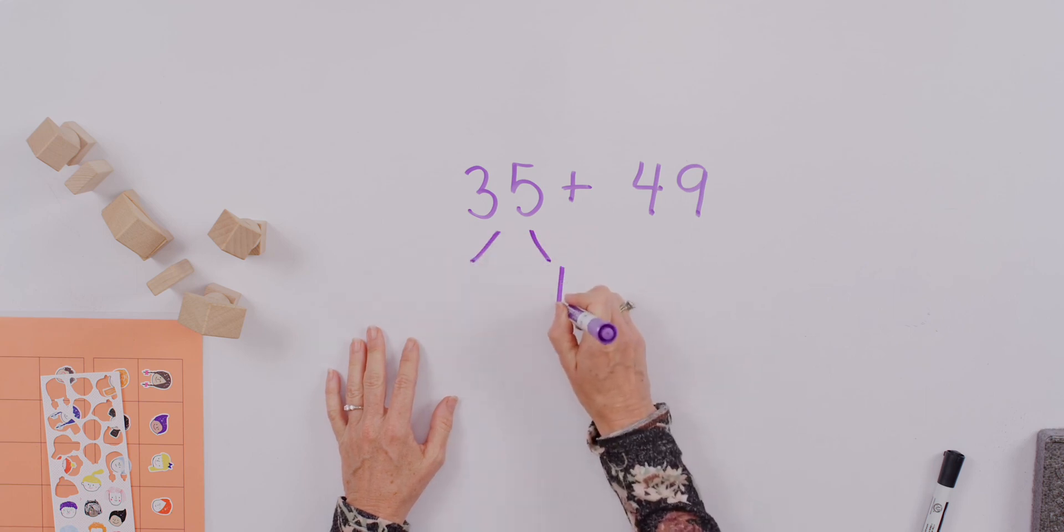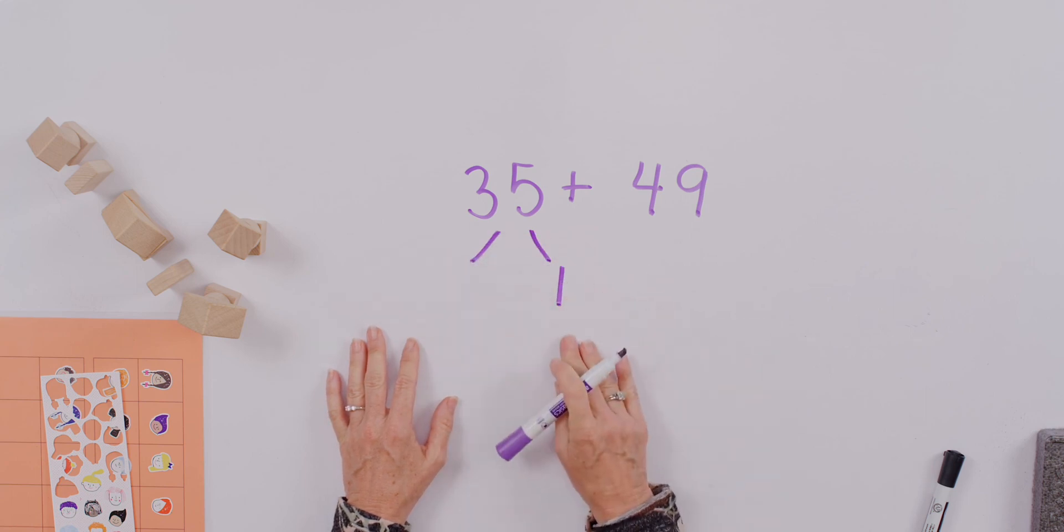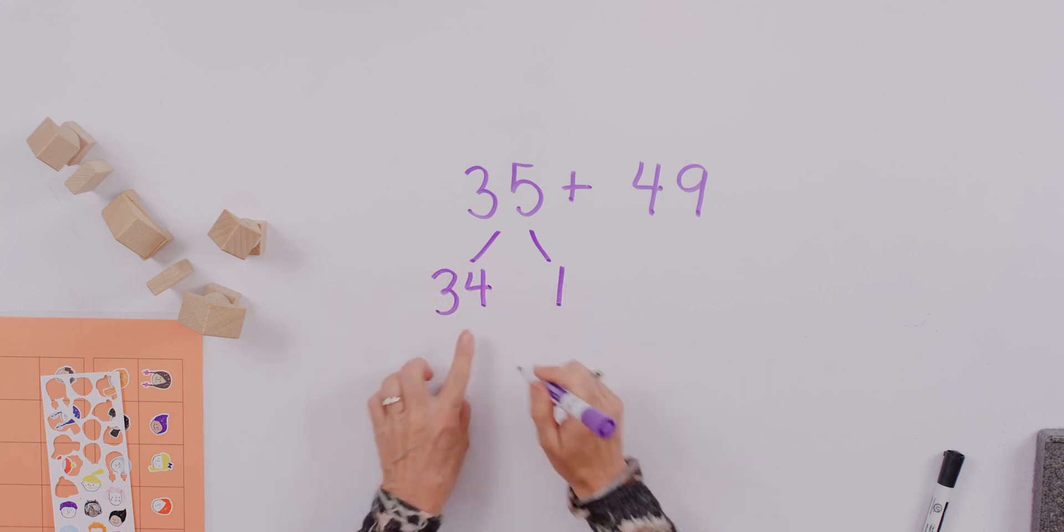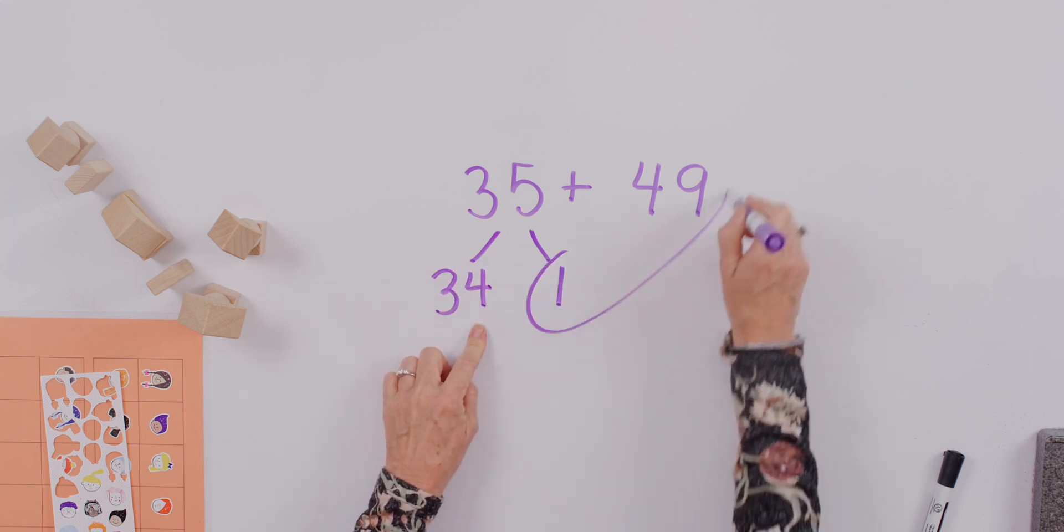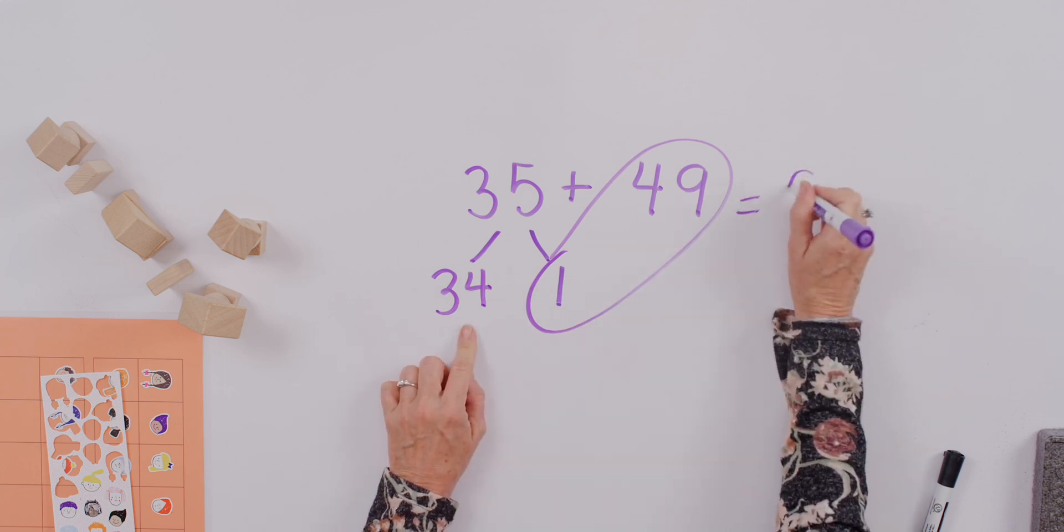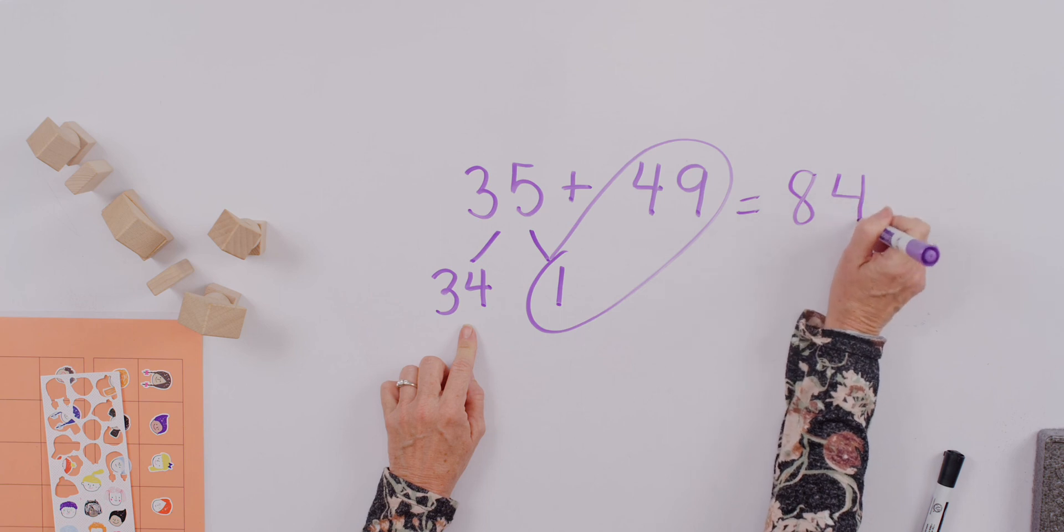If I want to add one to the forty-nine, I get it from the thirty-five, and I recognize the number bond leaves me with thirty-four on this side. So we can say fifty plus thirty-four. That equals eighty-four.